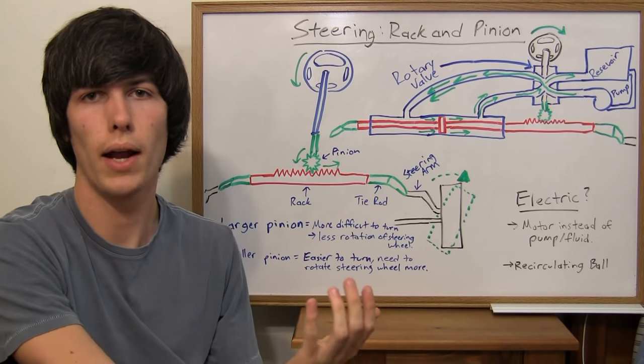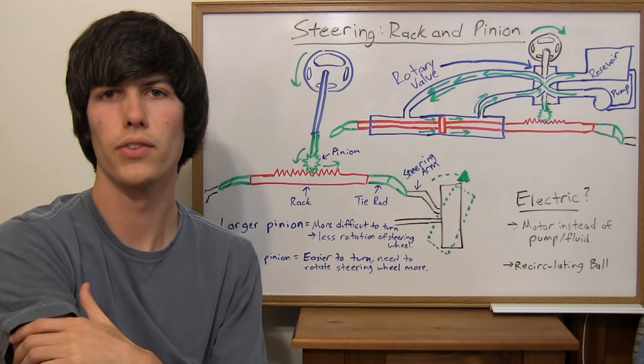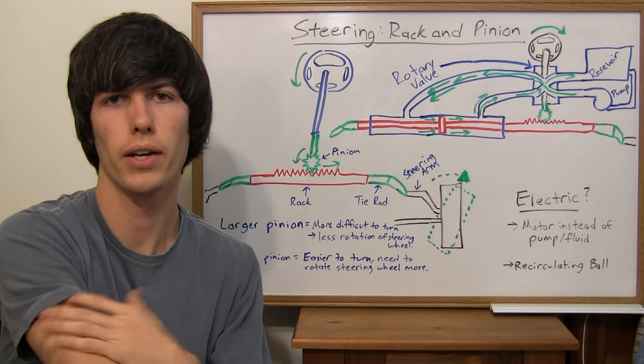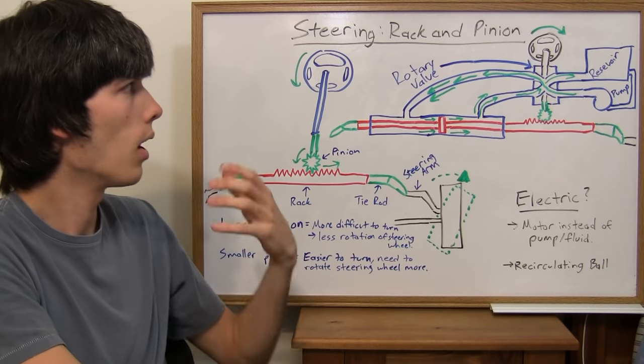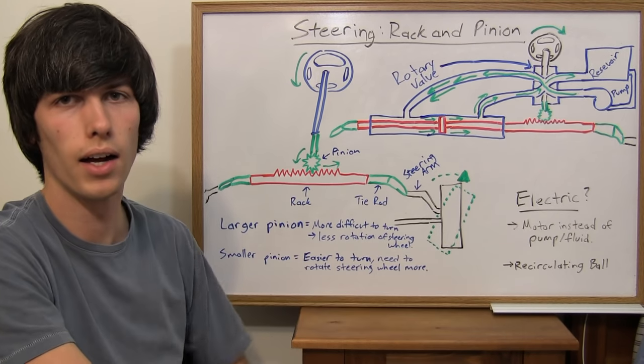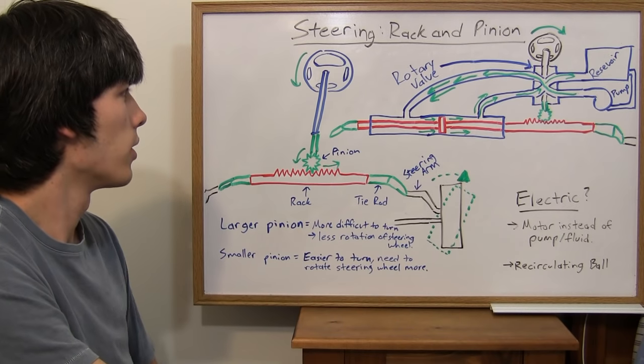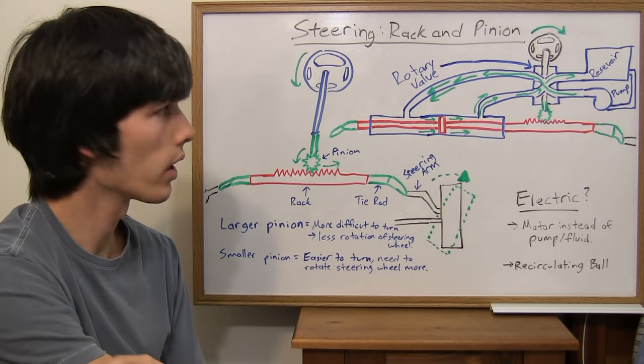I'm going to go over the rack and pinion version of steering. There are other types of steering such as recirculating ball steering, and there's also electric power steering which can be added to that. But for this video I'm going to be going over rack and pinion. It's a fairly common steering mechanism and it's pretty simple to explain how the power steering works, which is another thing I'm going to go into.